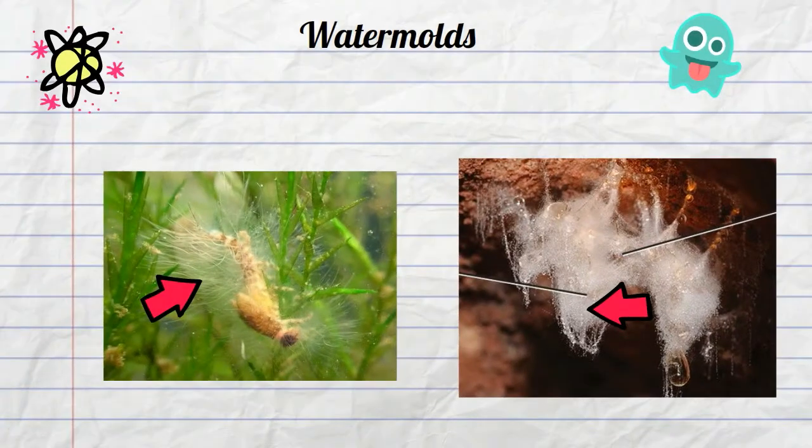Water Molds are decomposers found in fresh and salt water. They help clean up the aquatic environments by breaking down dead plants and animals.